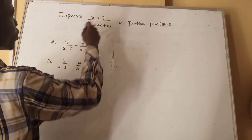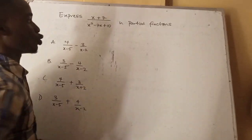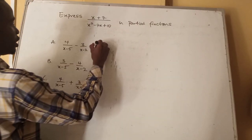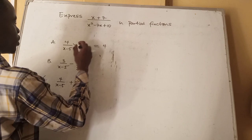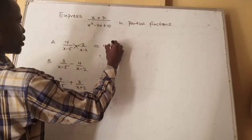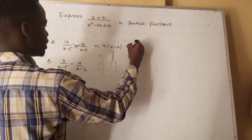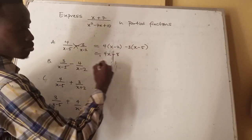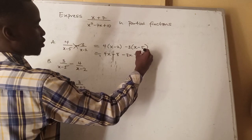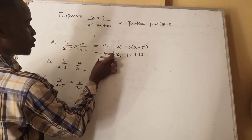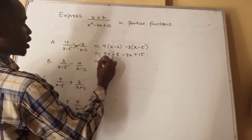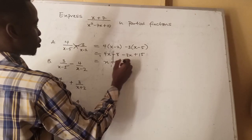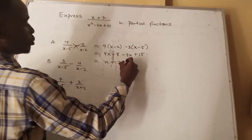We have the next question: express (x plus 7) over (x squared minus 7x plus 10) in partial fractions. We'll see whether this rule applies to all forms of partial fractions. We test: 4(x minus 2) minus 3(x minus 5). Opening the bracket: 4x minus 8 minus 3x plus 15. Collecting like terms: 4x minus 3x = x, minus 8 plus 15 = plus 7. That gives x plus 7 — which matches our numerator, so this answer is correct.